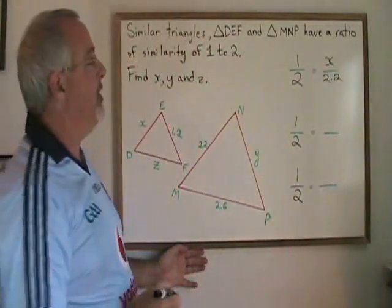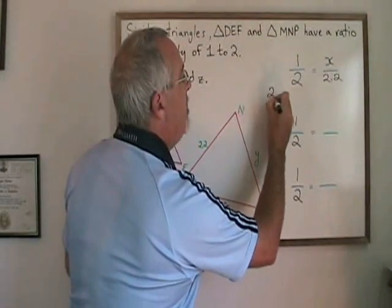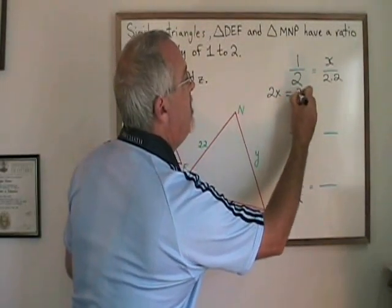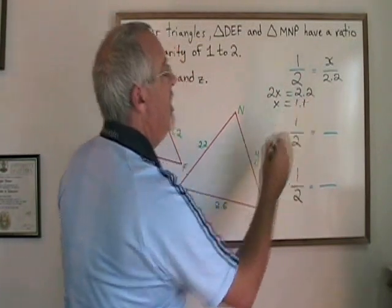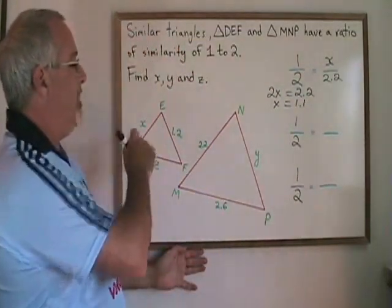Now we just have to cross multiply. We get 2X equals 2.2, and then X will be equal to 1.1. The length of side X is 1.1.